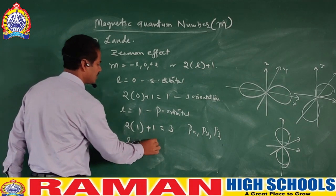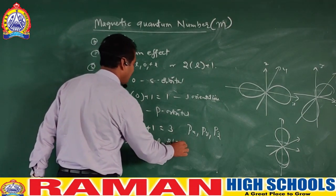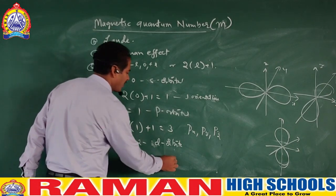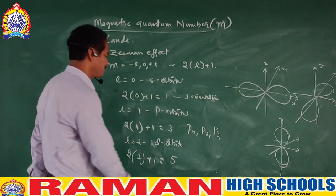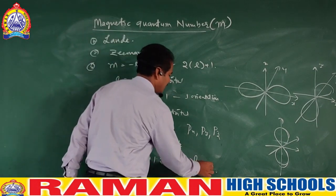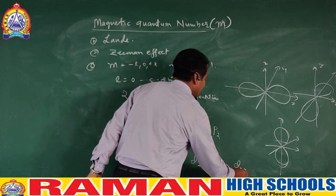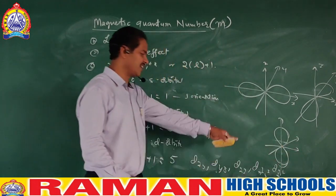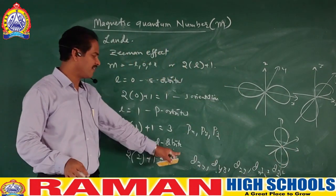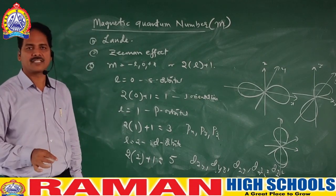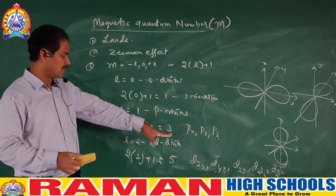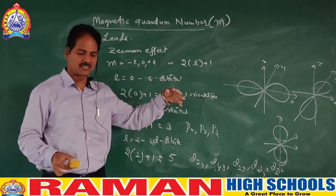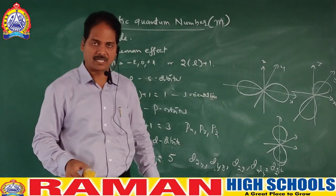When L is 2, it is D sub-shell and D orbital. So 2 × 2 + 1 = 5. There will be 5 D orbitals: Dxy, Dyz, Dxz, Dx²-y², and Dz². You can see those figures in the textbook. This is a very important topic for 10th class exams, as diagrams showing the shapes of P and D orbitals may be asked for two marks.